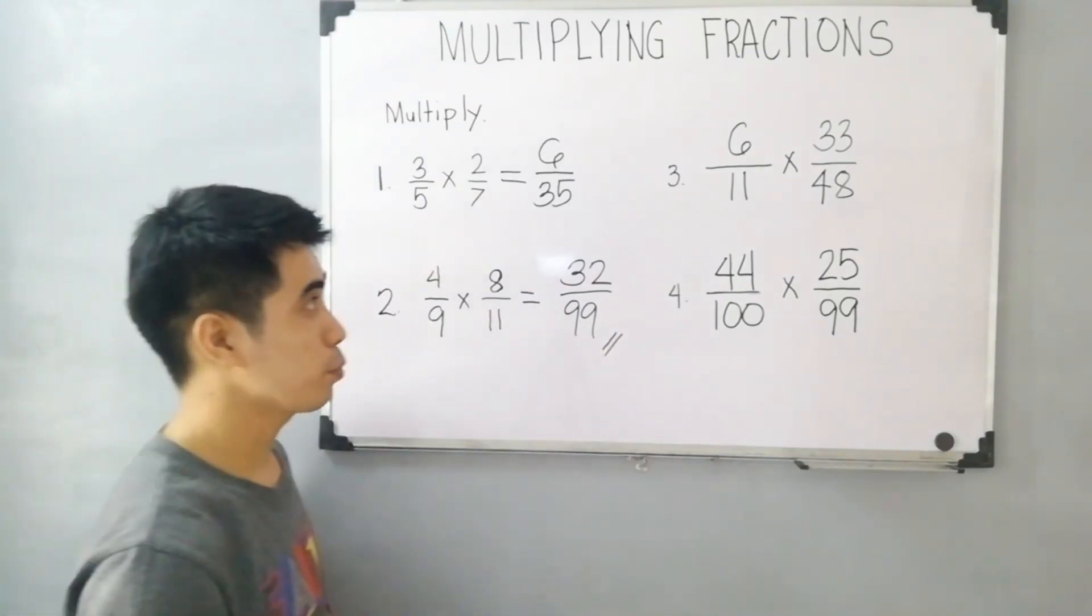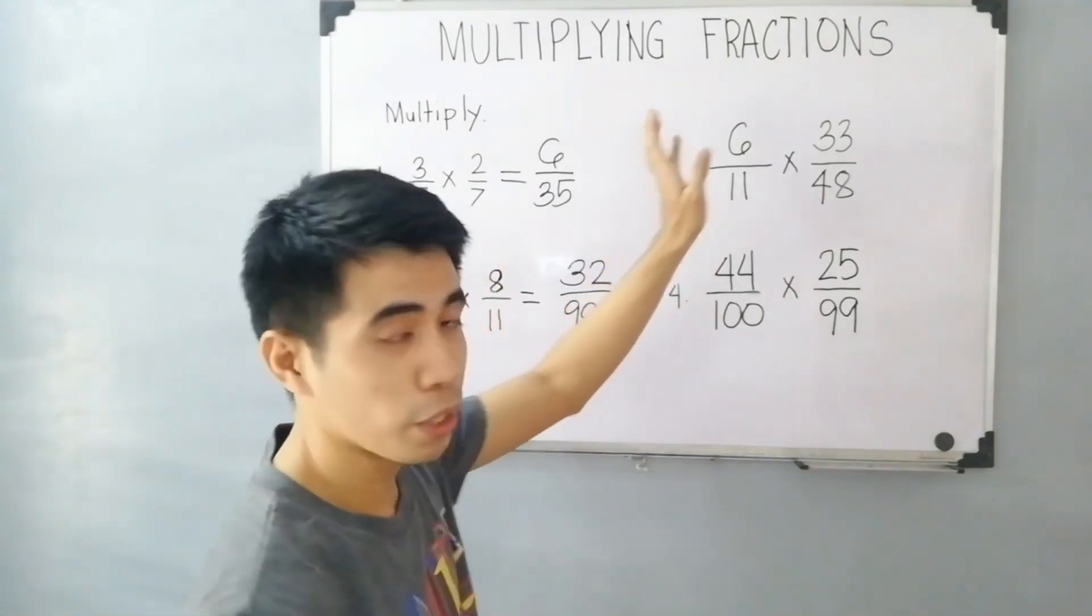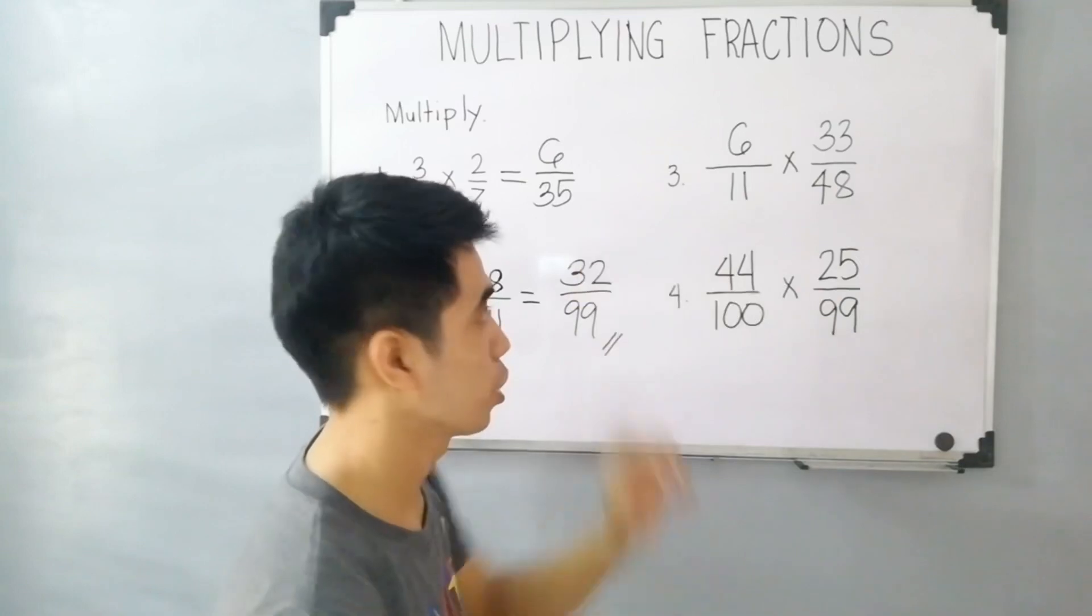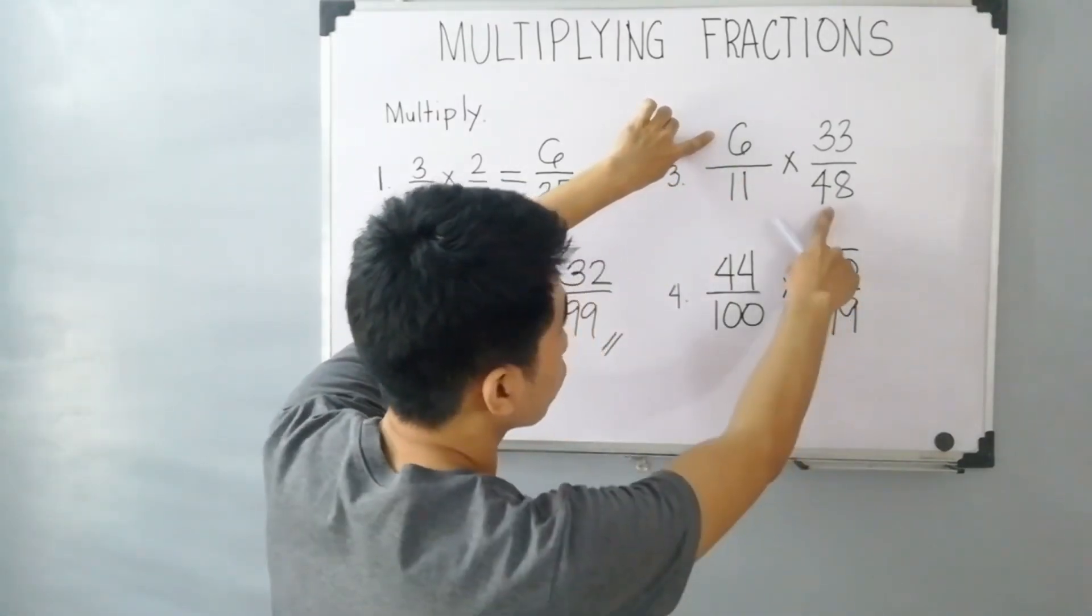For item number 3, let's analyze if numerators can simplify to denominators. We have 6, we have 48.